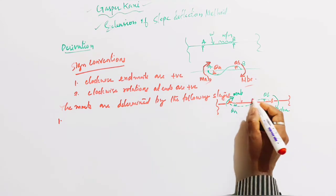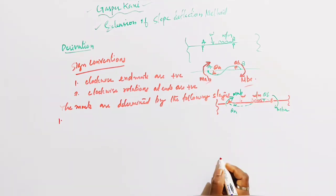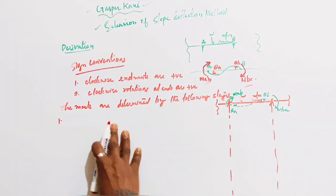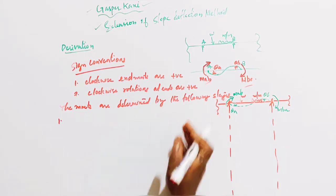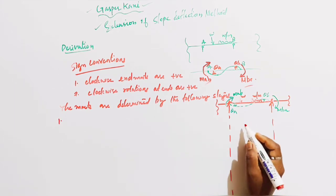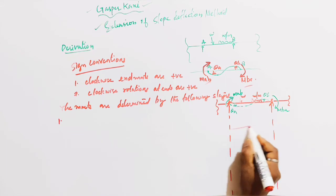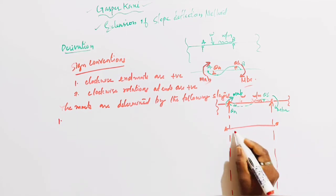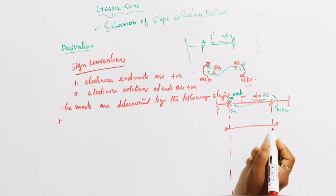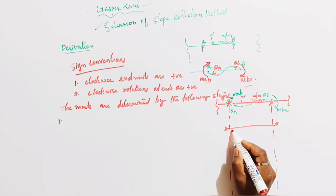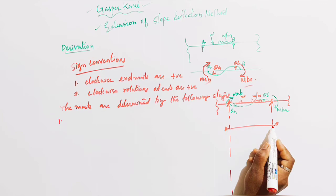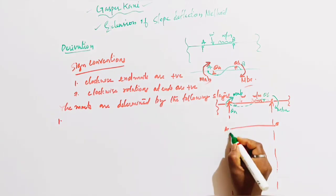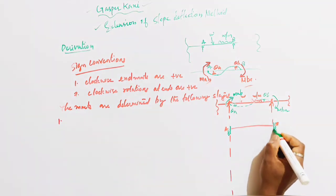The loads are a point load W and a UDL of W per meter. Suppose this is simply supported. Step 1: The end A and B of the member AB are first considered as fixed — similar to the first step in the slope deflection method.